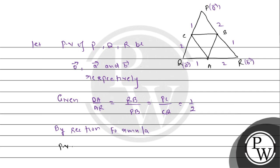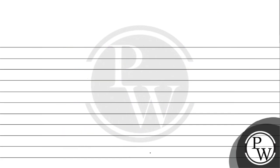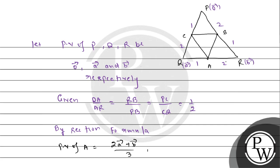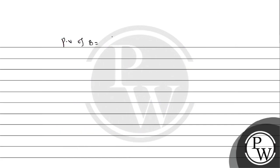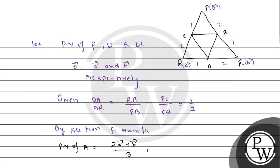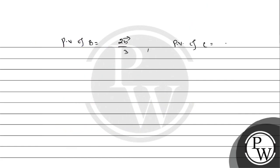By the section formula, position vector of A = (2·vector_a + vector_b) / 3. Position vector of B = 2·vector_b / 3. Position vector of C = vector_a / 3.